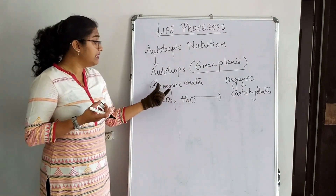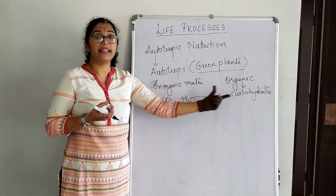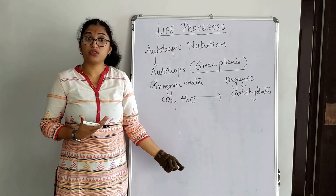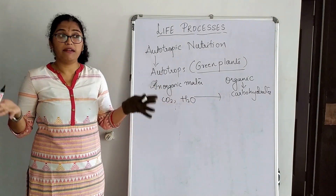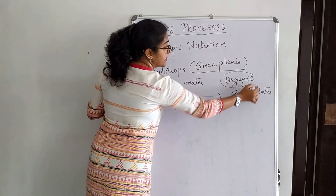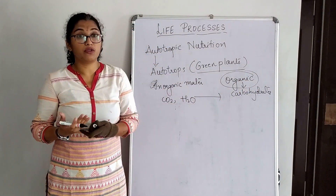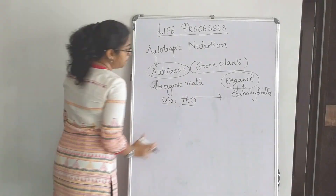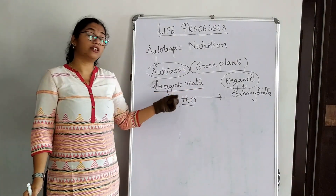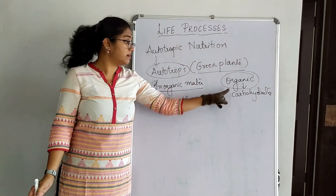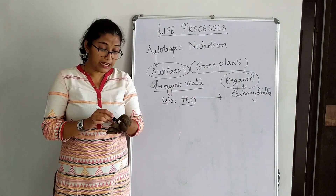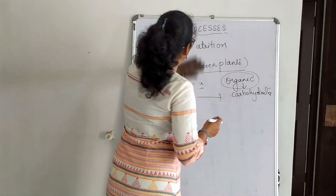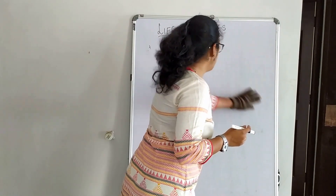Let us understand what inorganic matter and organic matter are. Inorganic matter is matter derived from non-living sources such as carbon dioxide, water, air, and minerals. Organic matter is derived from living sources — plants and animals. So autotrophs convert inorganic matter, that is carbon dioxide and water, into organic matter, that is carbohydrates, in the presence of sunlight and chlorophyll. This process is known as photosynthesis, which we will study in more detail now.